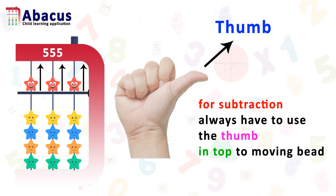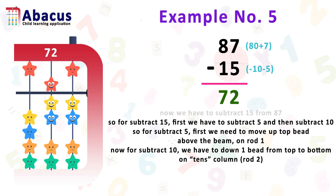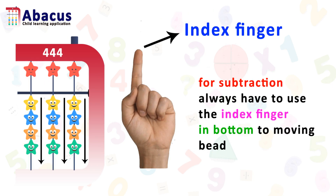Always use your thumb to move the bead on top for subtraction. Now, for subtracting 10, we move 1 bead from the top to the bottom below the beam on the 10th column, which is rod 2. Finally, we got the answer: 72. Here I used my index finger to move the bead. For subtraction, always use the index finger to move beads below the beam.